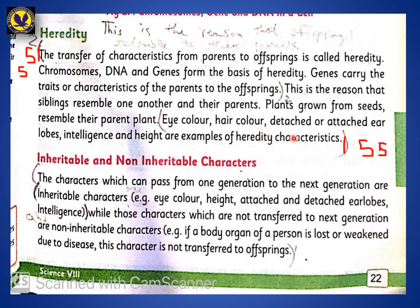Eye color, hair color, detached or attached ear lobes, intelligence, and height are examples of hereditary characteristics. Chromosome, DNA, and genes are the basis through which characteristics of children are passed down.